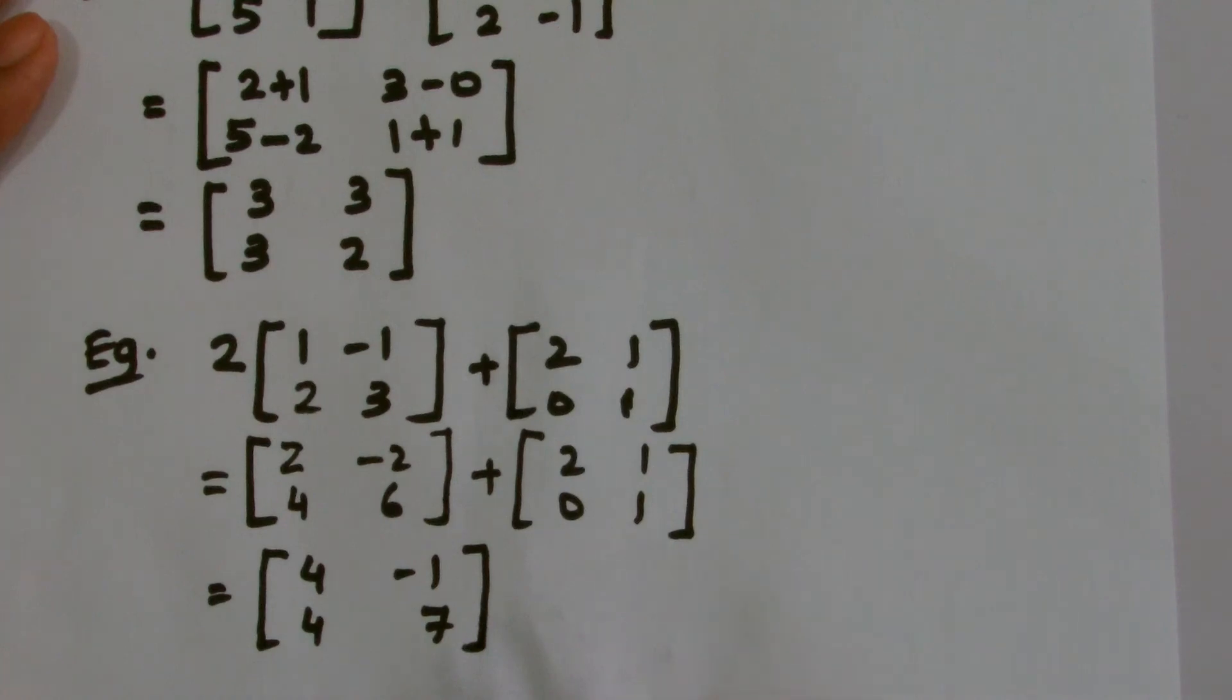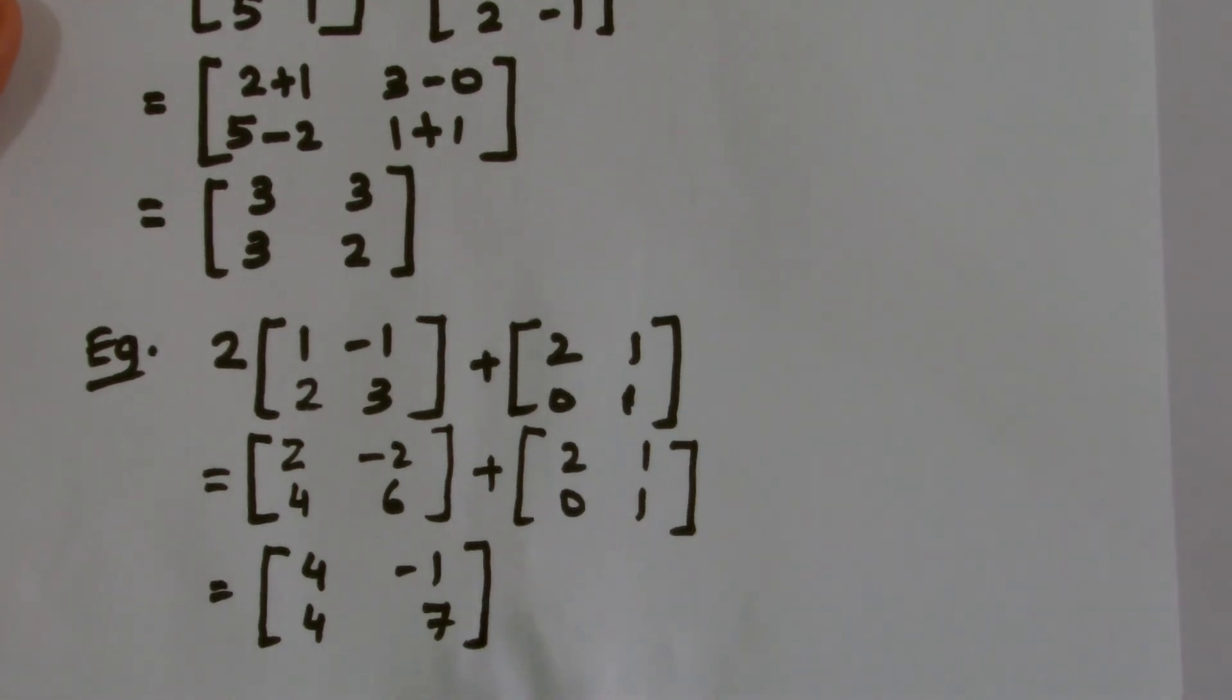So do remember all the rules. The basic rule to simplify, to add, to subtract is to have the same order matrix. Then only we can simplify, we can add, and we can subtract. Thanks for watching. Keep watching my video and do share. Bye-bye.